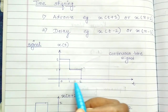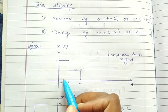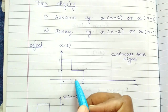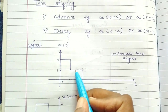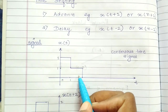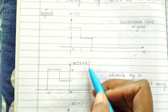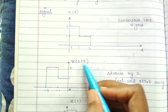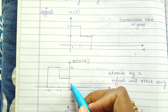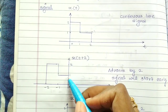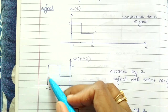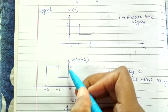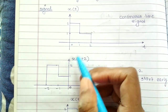So let's take an example and understand this. This is a given signal — it has an amplitude of 2 from 0 to 1 and an amplitude of 1 from 1 to 2. The advance signal X(t+2) of this signal is given as a left shift of the same signal, and the shift is of two units.